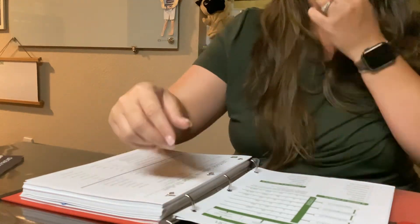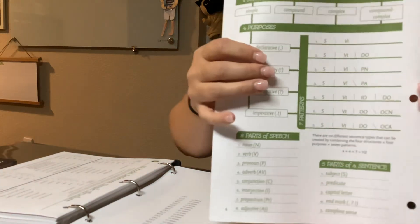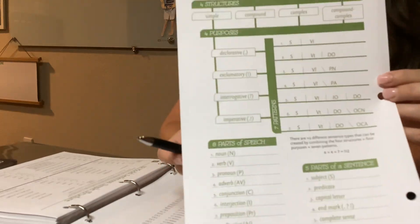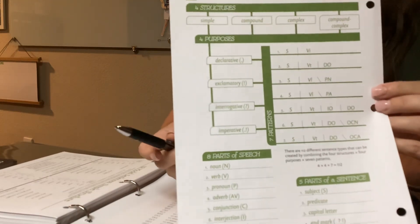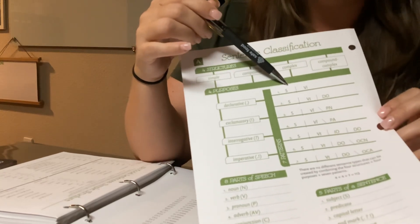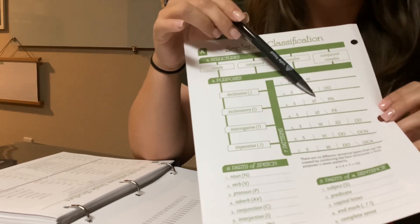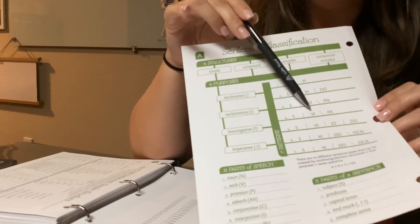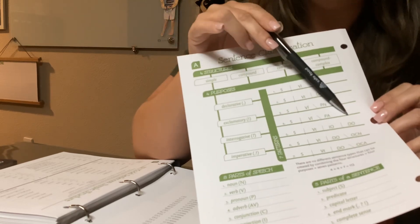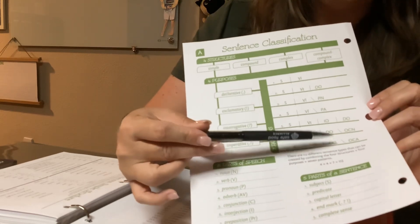And so there is a song to help us learn the seven sentence patterns. And so just reciting that a couple of times a day will help jump start the learning process, because we unpack a lot on the first few weeks. So you can start practicing by just attending to this chart. S-V-I-S-V-T-D-O-S-V-L-P-N-S-V-L-P-A-S-V-T-I-O-D-O-S-V-T-D-O-O-C-N-S-V-T-D-O-O-C-A.